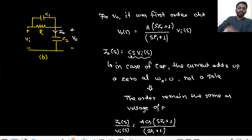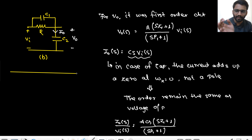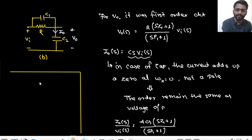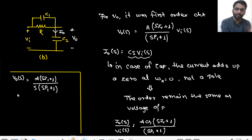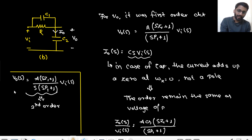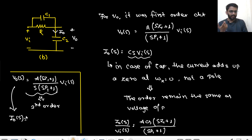But in the case of an inductor, things will change. Let's forget this circuit for a moment and think of a general case. Suppose in a capacitive circuit, V_out(s) has two poles — say poles at s/p1 and s/p2 — making it a second-order circuit. If you are now collecting the current at the same capacitor, what would the order be?